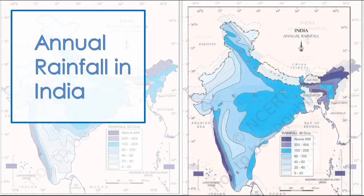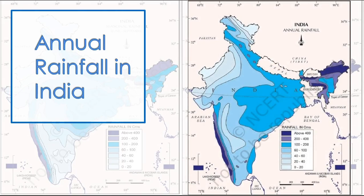Next map — annual rainfall in India: the western coast and north-eastern India receive rainfall of more than 400 cm. The western side of the Western Ghats also receives more than 400 cm. The western side of Rajasthan and Leh Ladakh both receive less than 20 cm of rainfall.